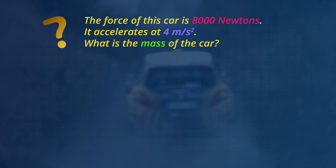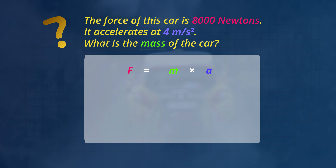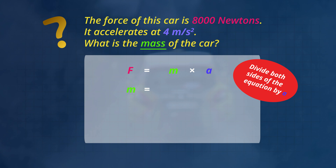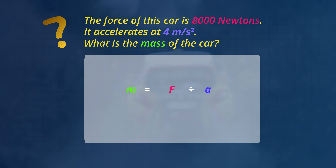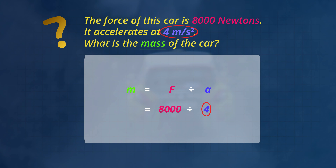The force of this car is 8,000 Newtons and it accelerates at 4 meters per second squared. What is the mass of the car? In this example, we will rearrange the rule to find the mass of the object. In the force rule, mass is multiplied by acceleration. But we want the mass by itself, so we divide both sides of the equation by the acceleration. The rule for mass equals force divided by acceleration. The force is 8,000 Newtons divided by the acceleration of 4 meters per second squared. So the mass of the car is 2,000 kilograms.